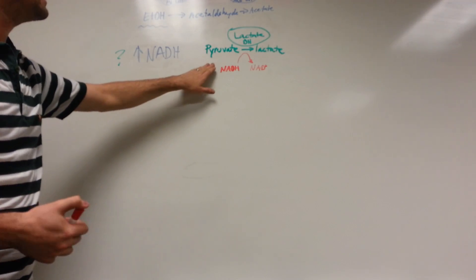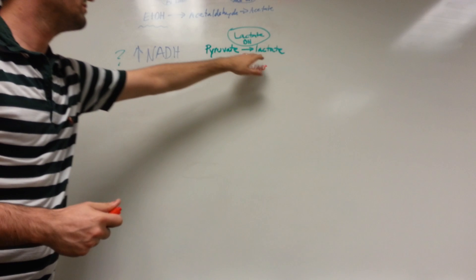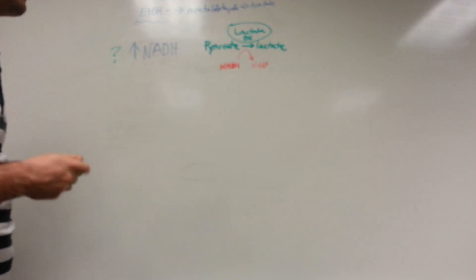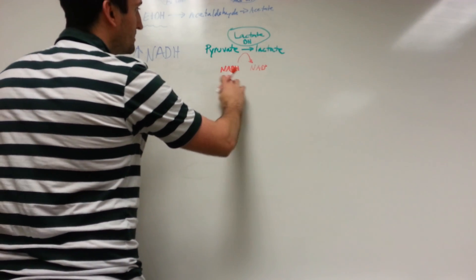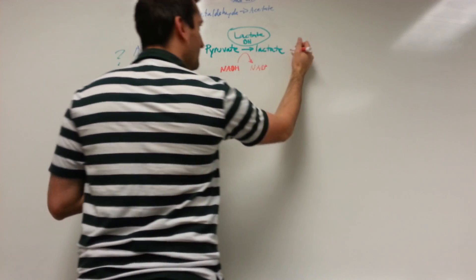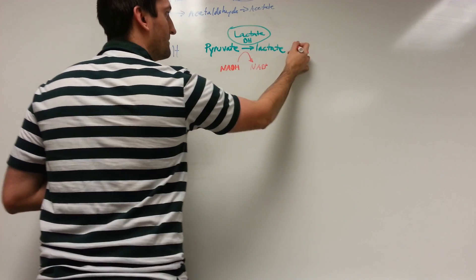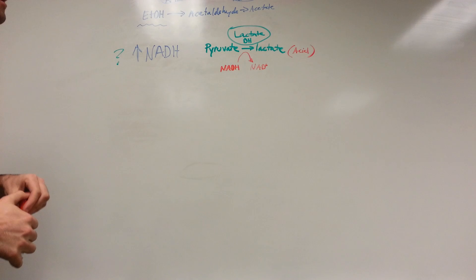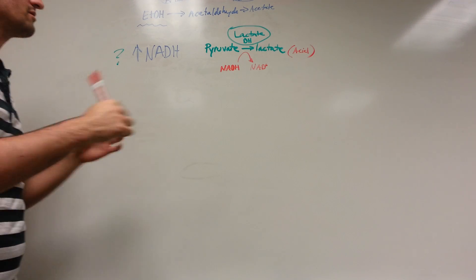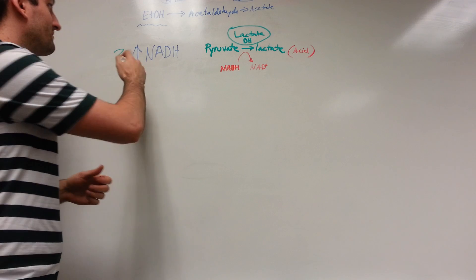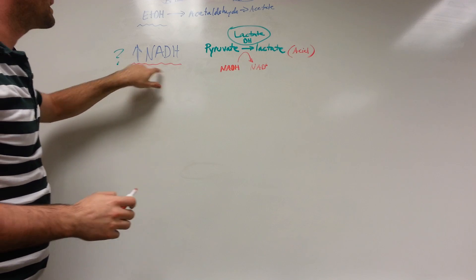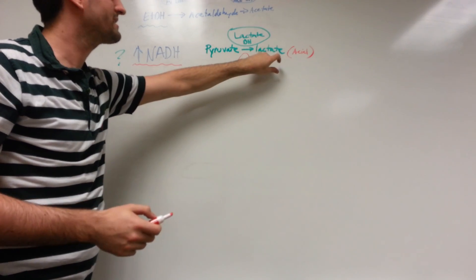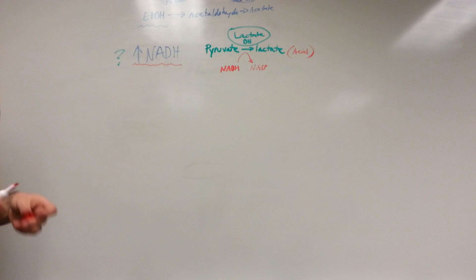The goal of this reaction is to convert pyruvate into lactic acid, and then that lactic acid will go through the Cori cycle in the liver. We can convert pyruvate into lactic acid which can help contribute to our metabolic acidosis. There is our metabolic acidosis component.